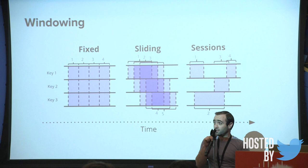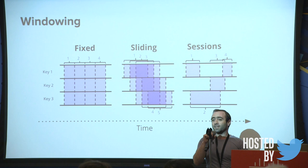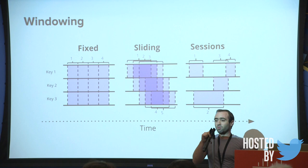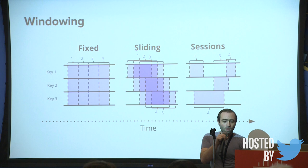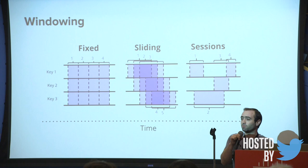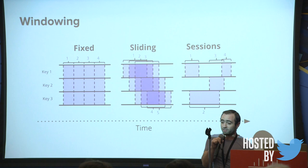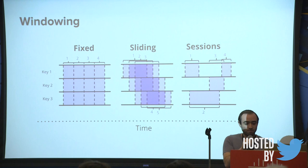Then we get to more interesting things like session windows, where we're connecting all the activity for a particular user. For example, everything that happens when a user pulls out their phone, selects a destination, and orders a ride — a session window could connect all of that and do some computation on the whole user session. These are nice high-level concepts that allow us to simply express what application developers might want. An ML engineer might say, I want to know how many cars there are in this part of the city in the last five minutes, but there's a lot of challenges in actually computing that.